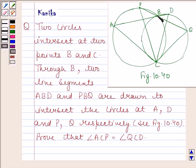Through B, two line segments ABD and PBQ are drawn to intersect the circles at AD and PQ respectively. Prove that angle ACP is equal to angle QCD.